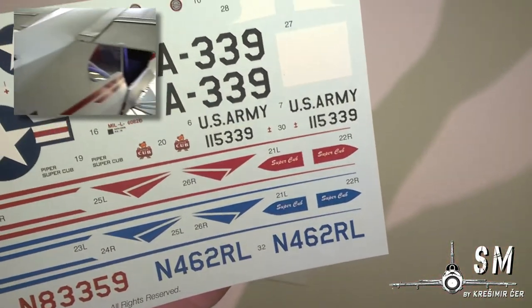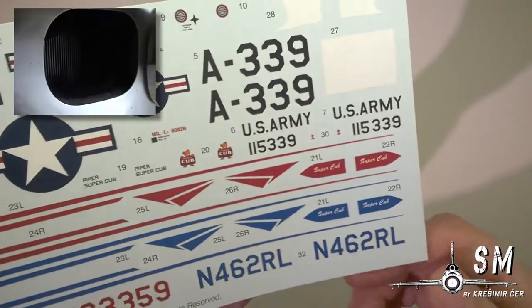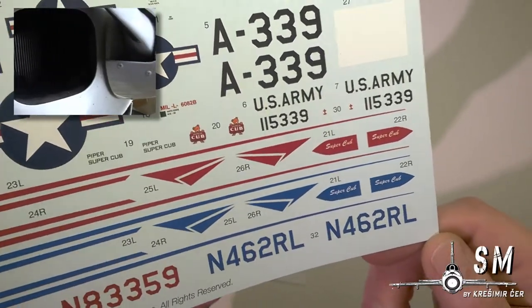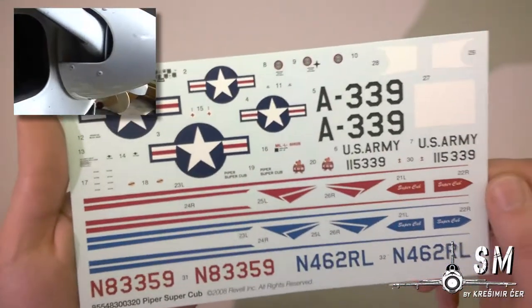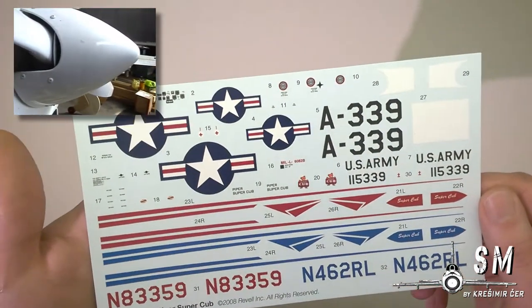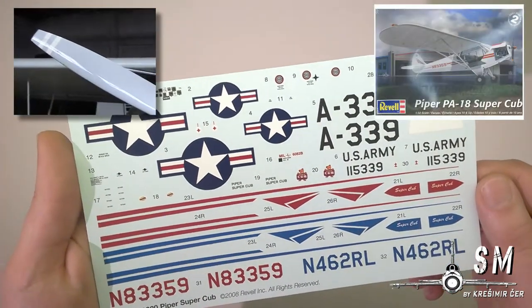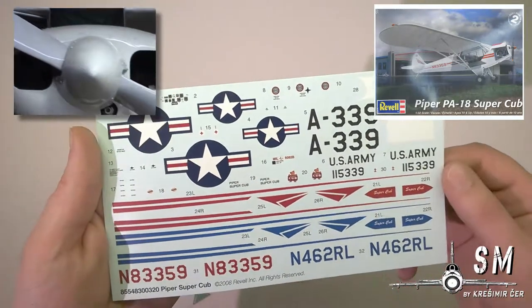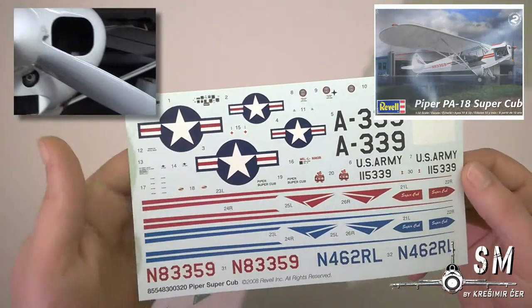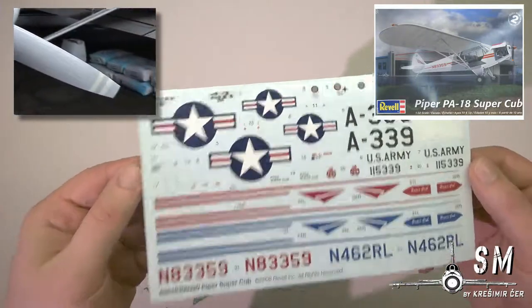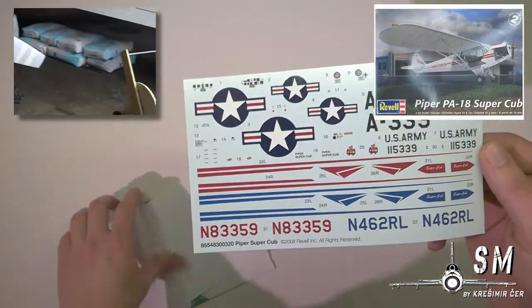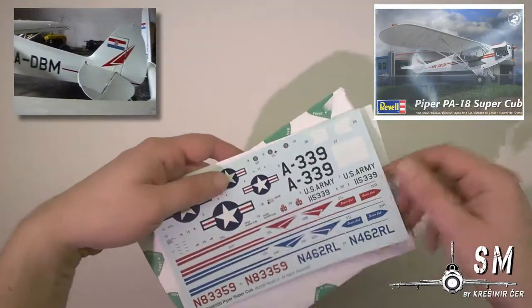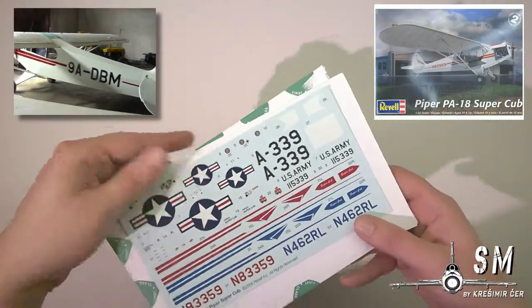It's not here anymore because sadly it crashed and it was written off. But this decal sheet comes from the kit number 85-5483, it's a Revell kit. Actually it is the same kit as this one without the bush wheels, so I will be building that one.